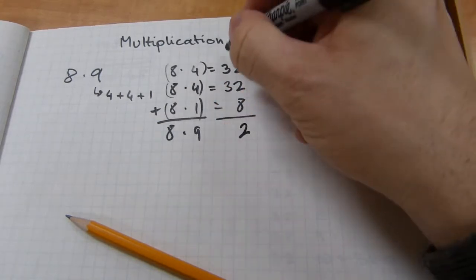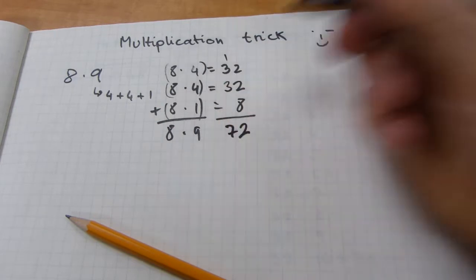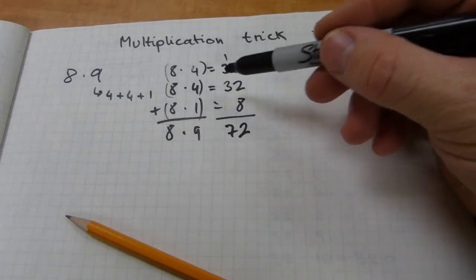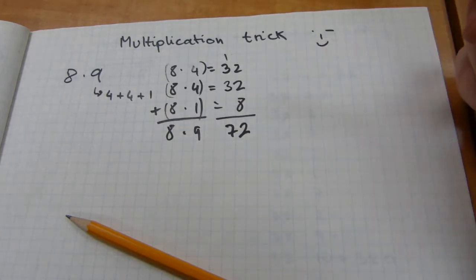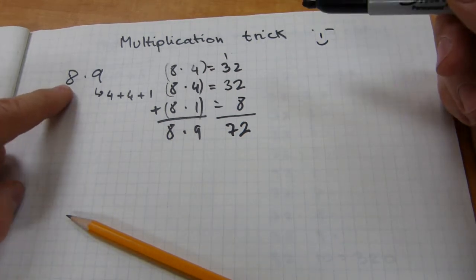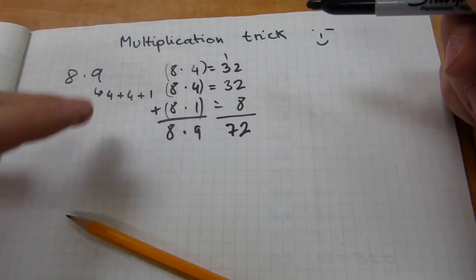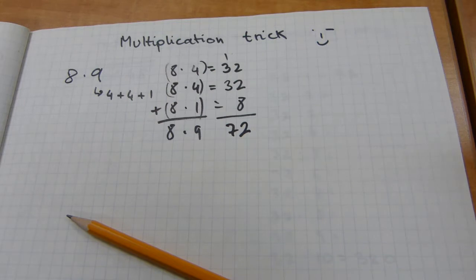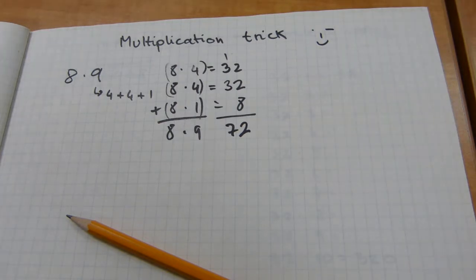If you add 32 plus 32 plus 8, that's 72. And that's basically what the distributive property says — you can just do addition instead of multiplication. Of course you can also do 8 plus 8 plus 8 plus 8 plus 8 plus 8 plus 8 plus 8, as if you have 9 pieces of 8. That also works, because multiplication is by definition shorthand for repeated addition. That's why this trick works — doing addition instead of multiplying.